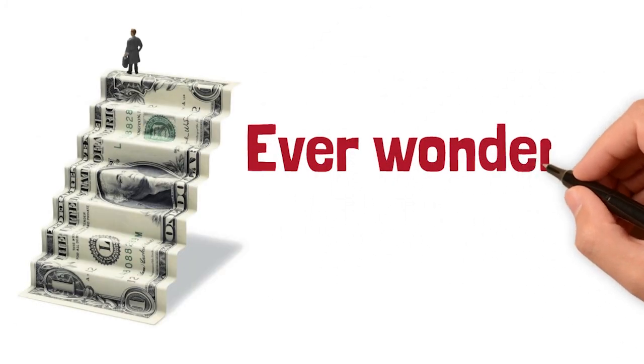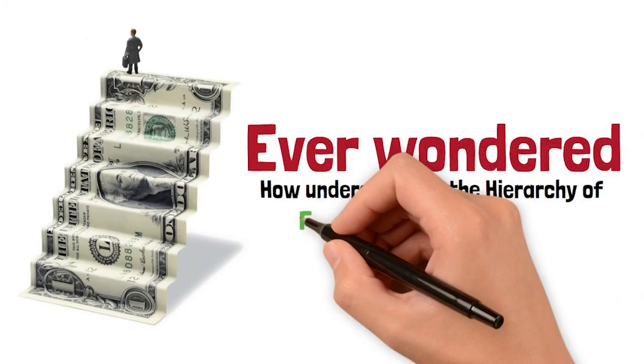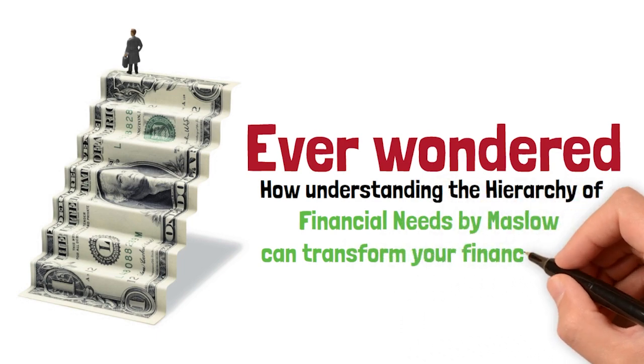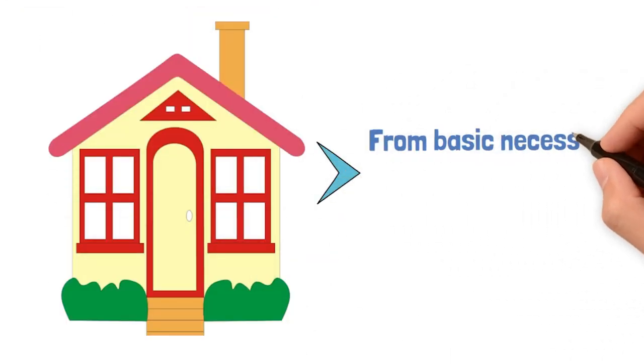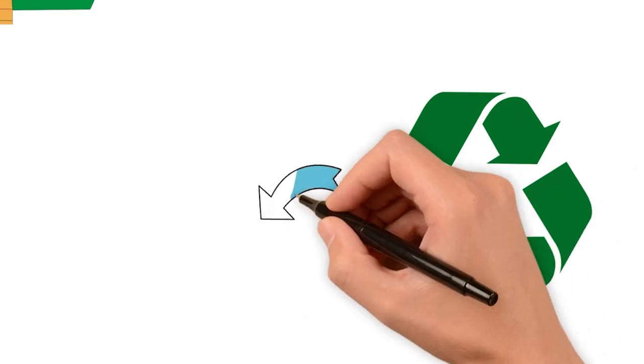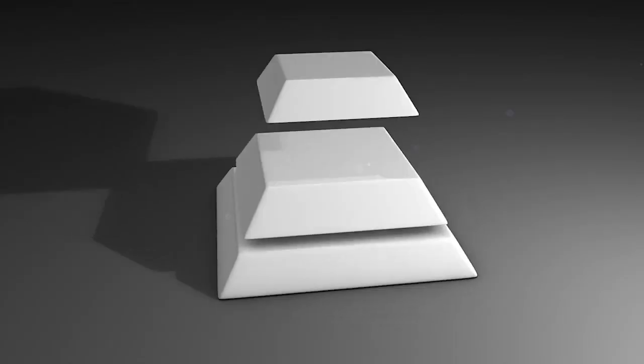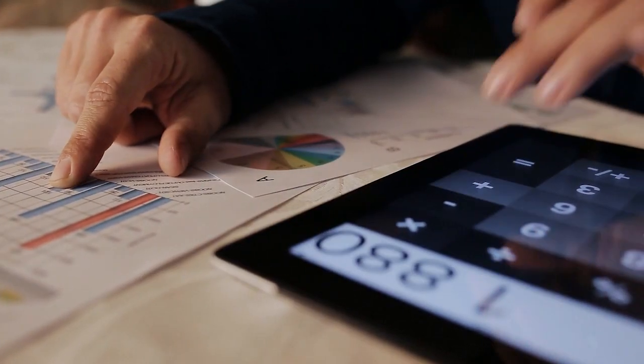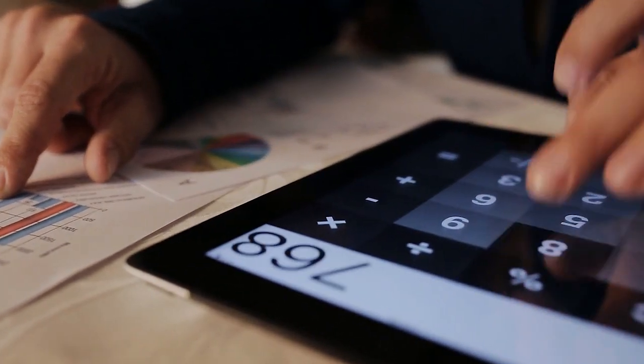Ever wondered how understanding the hierarchy of financial needs by Maslow can transform your financial life? From basic necessities to financial growth and philanthropy, this hierarchy outlines the key steps to achieving financial well-being. In this video, we'll dive deep into Maslow's theory and explore why it matters for managing your money effectively.